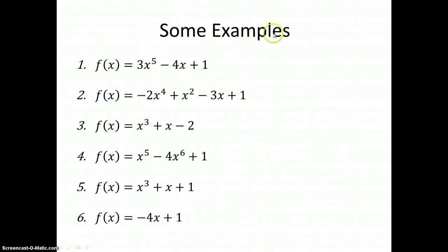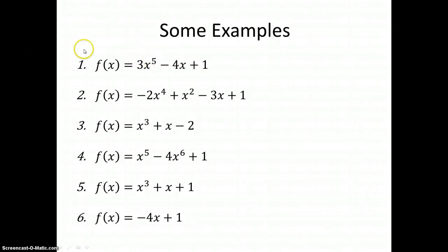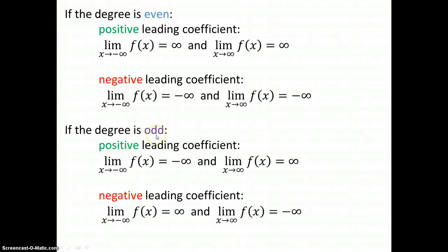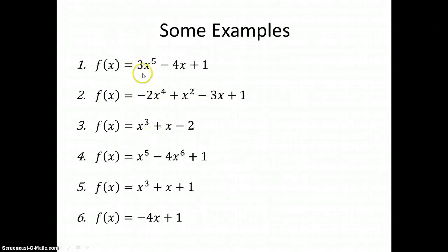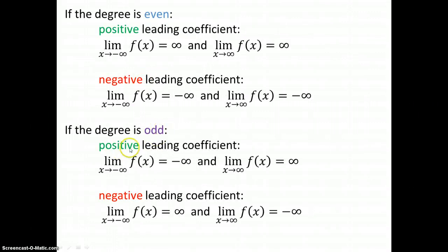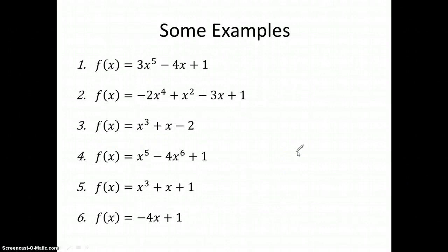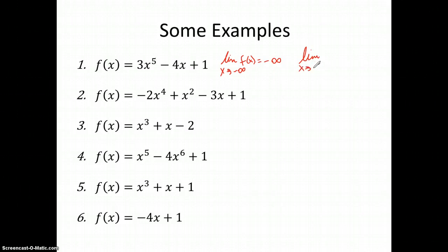So let's look at a few examples. We're going to run through these and find the end behavior. So here's the first one: 3x to the fifth. The first thing we look at is the degree. The degree is five, so this is an odd degree, and our coefficient is positive 3. Odd degree with a positive coefficient — we can write: the limit as x approaches negative infinity is negative infinity, and the limit as x approaches positive infinity is positive infinity.